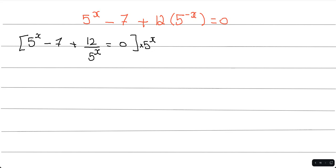So 5 to the power of x times 5 to the power of x, that gives me 5 to the power of 2x because I add the exponents. 5 to the power of x times 7 is not 35x because this is not the same base, so you're just going to get 7.